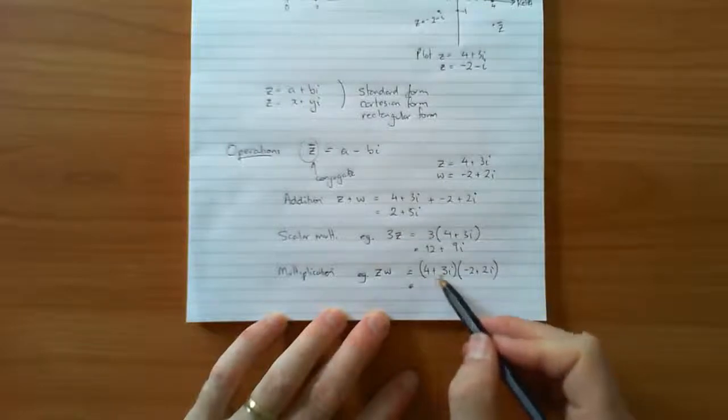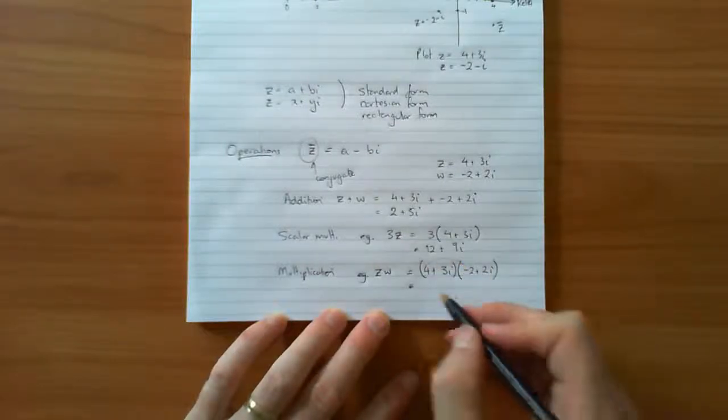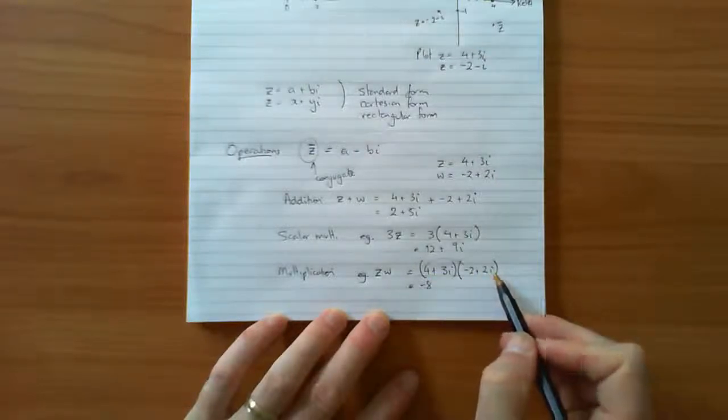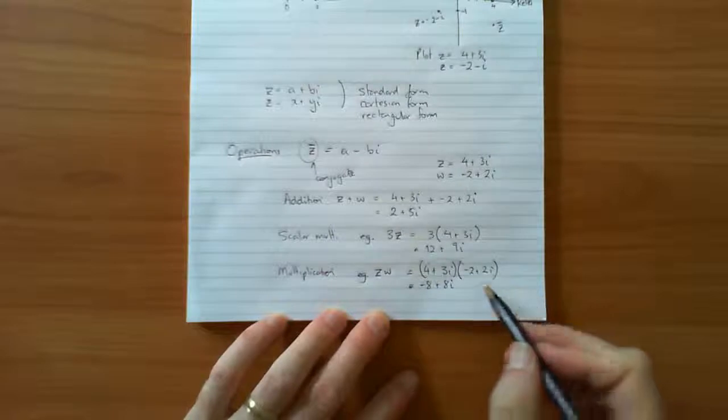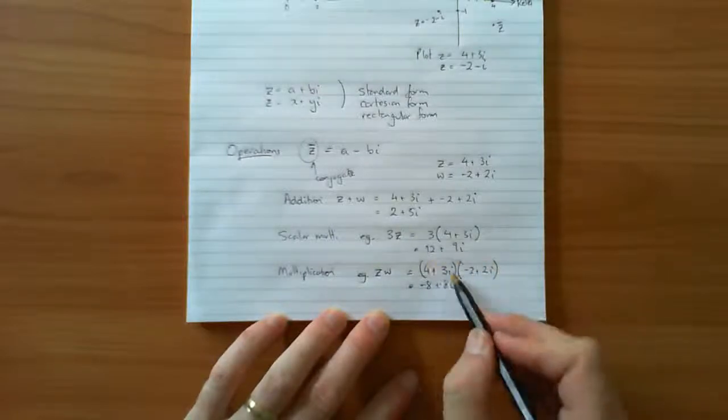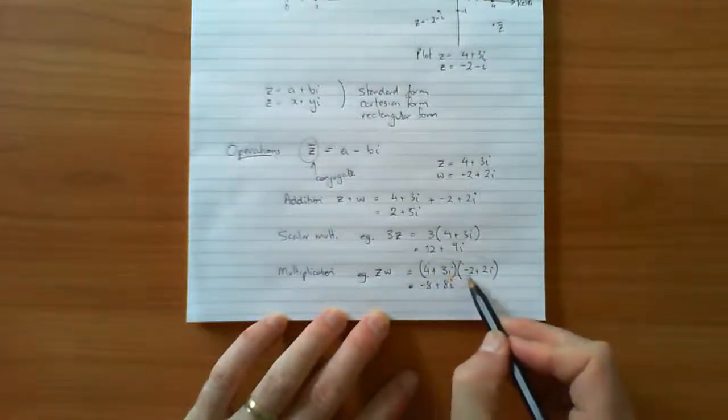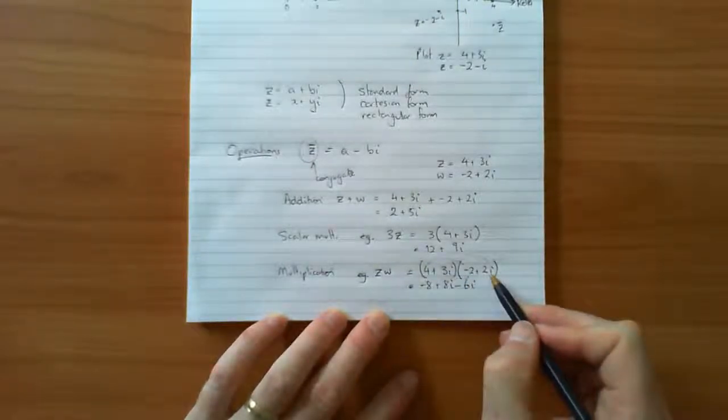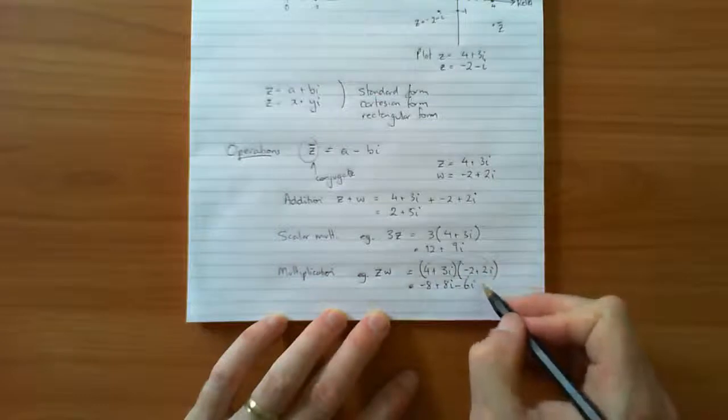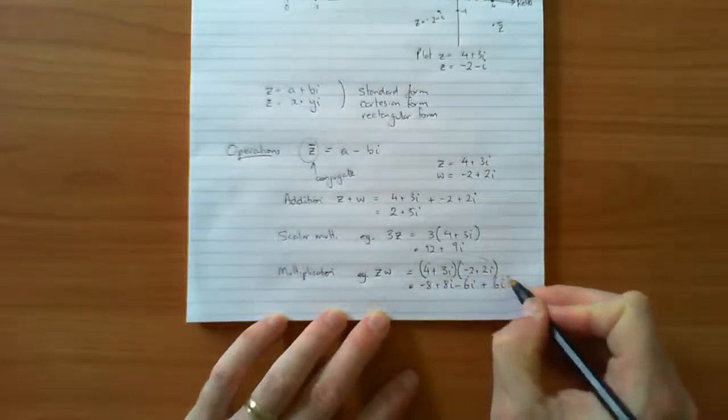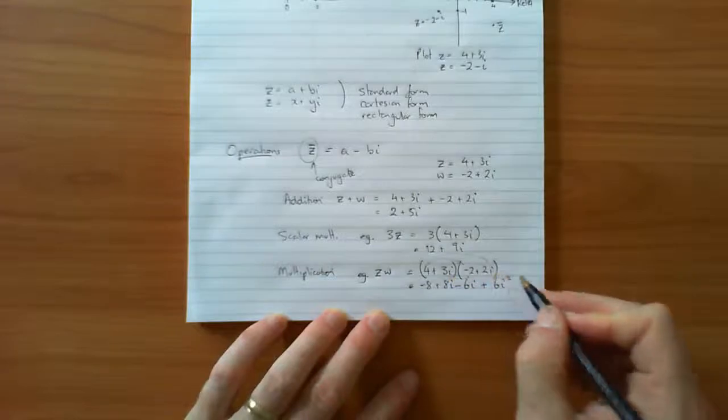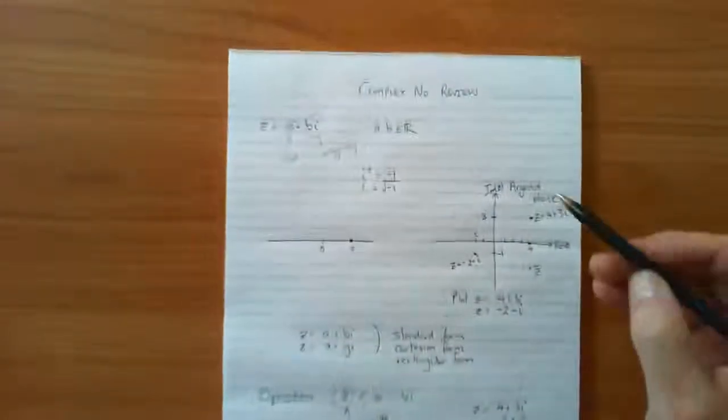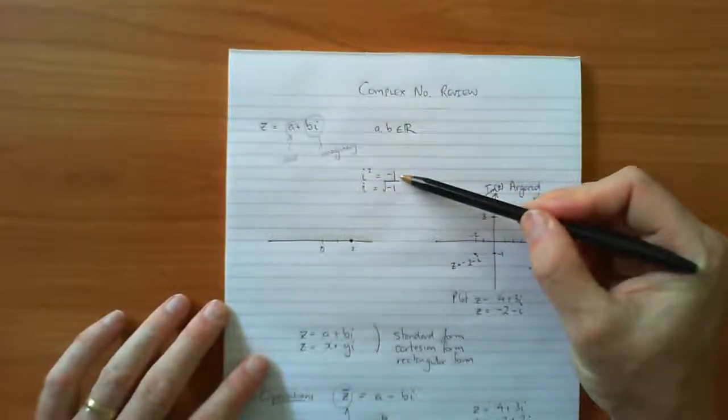So every term multiplies every other term. So the 4 times the negative 2 is negative 8. 4 multiplied by 2i will be 8i. Then we go this one, 3i times negative 2 will be negative 6i. 3i times 2i, positive times a positive will be a positive, 3 times 2 is 6i squared. The i times the i becomes an i squared. Really important because you remember back up here we said that i squared was equal to negative 1.